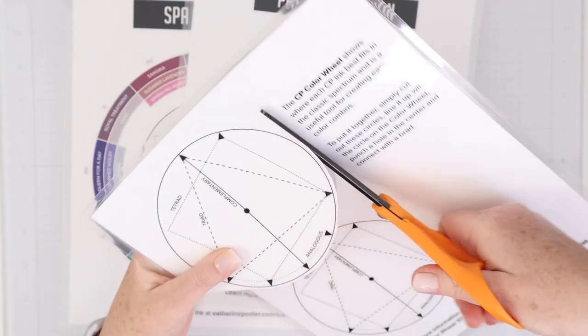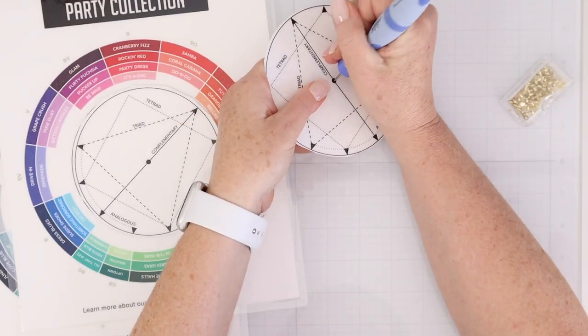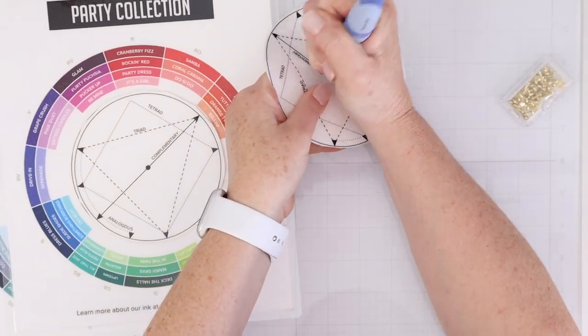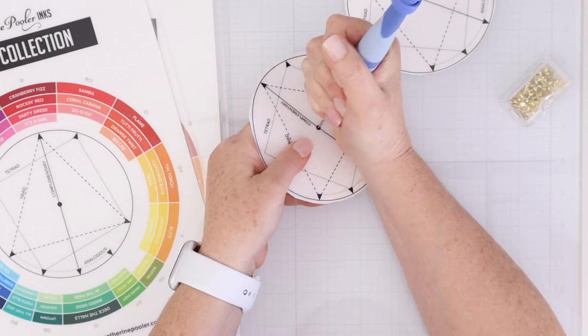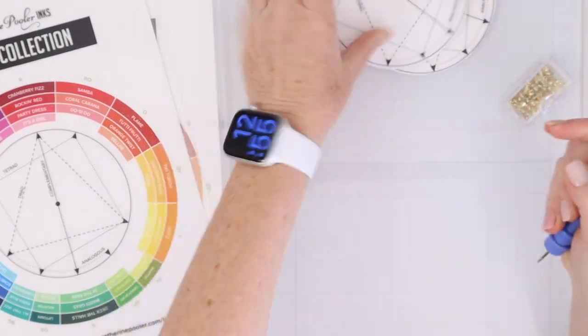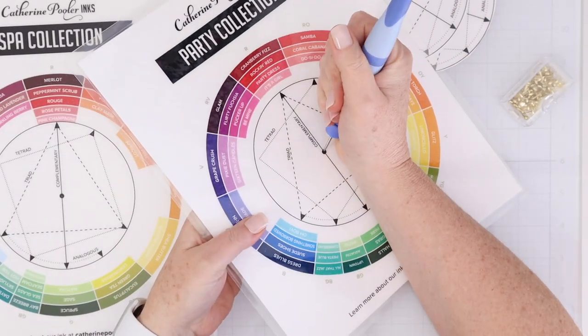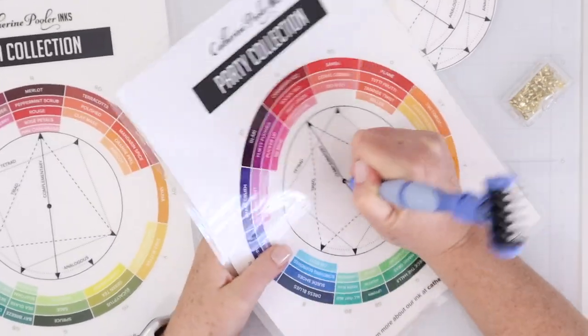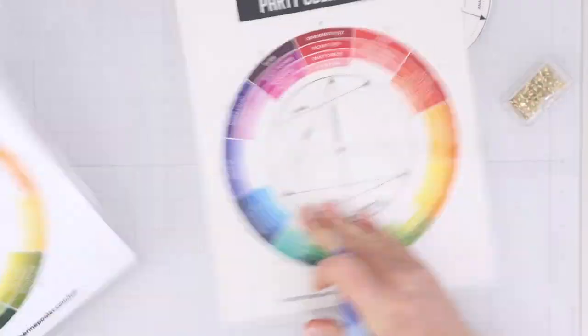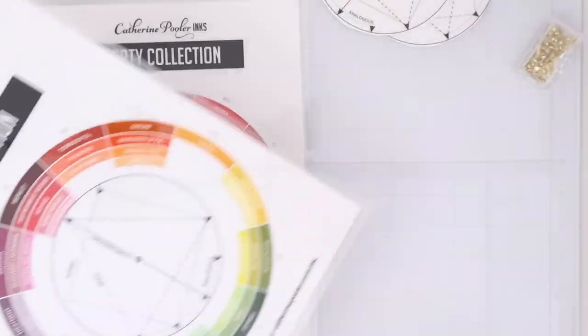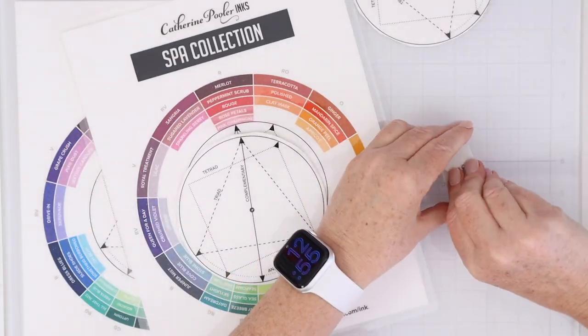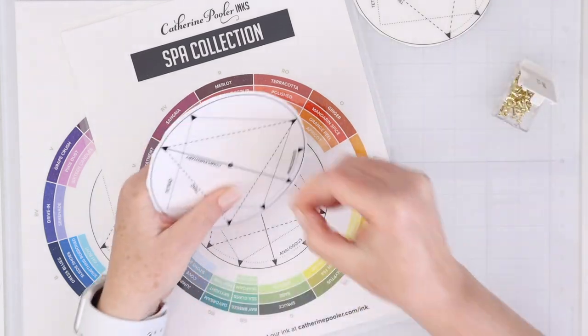I don't have a great printer so I printed mine at FedEx Kinko's and laminated them. You get three sheets: one is the spa collection color wheel, one is the party collection color wheel, and one is the center of the wheel that you turn to create the different color combinations. I'm using my Spellbinders tool-in-one to poke a hole through the laminated and heavy cardstock that I had them print. Just be careful, don't poke your hand.